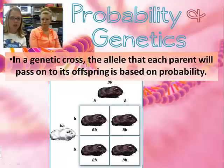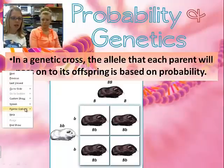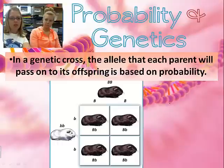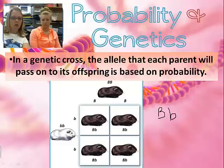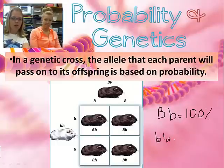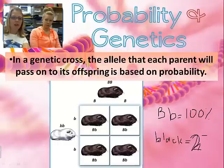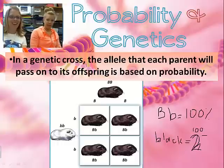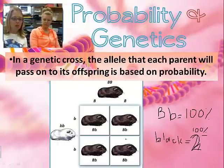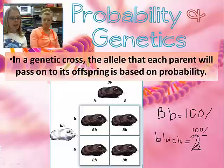One thing we expect you to do when talking about probability is to list the probability of outcomes. For this cross, 100% of offspring will be big B little b, which also means 100% will be black. Do this with all your Punnett squares. Remember: there are four sections, so each one is worth 25%, giving you 25, 50, 75, 100.